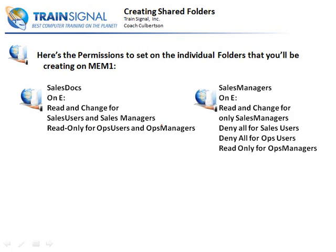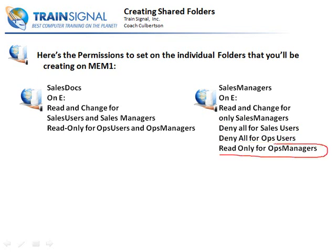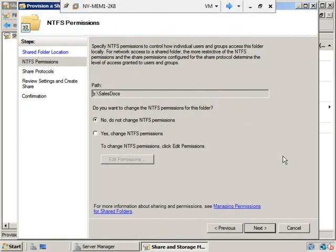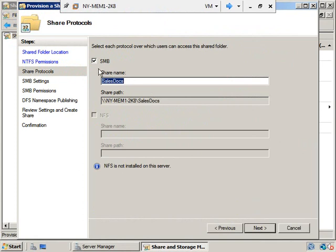Let's switch back to MEM1. We're going to skip the NTFS permissions for now and come back to them later. Here are the share protocols — SMB, server message block, is how we're sharing. Sales docs is fine. NFS is not installed on the server — NFS stands for network file system, and you'd only use it if you have Unix, Linux, or Macintosh operating systems on your network. If you're a Windows-only shop, you'll never have to wrestle with it. So we'll use only the SMB protocol and click next.